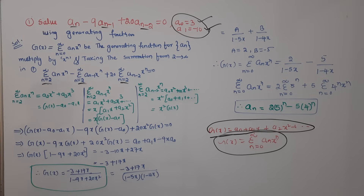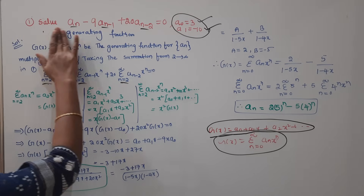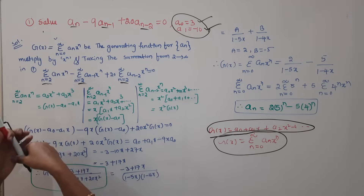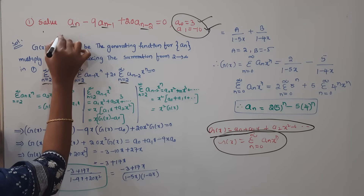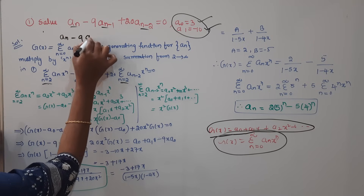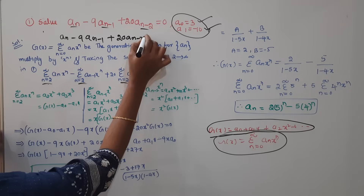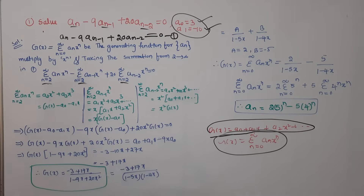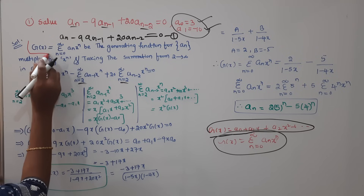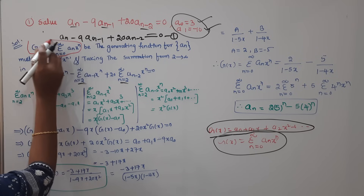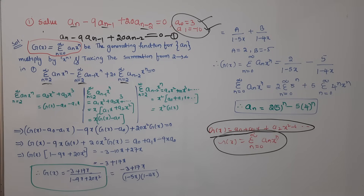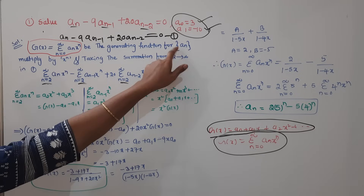I will go into the generating function basics. First step: consider the equation aₙ minus 9aₙ₋₁ plus 20aₙ₋₂ equals 0. I will consider this as the generating function definition: G(x) equals the summation from n equals 0 to infinite of aₙ x to the power n.